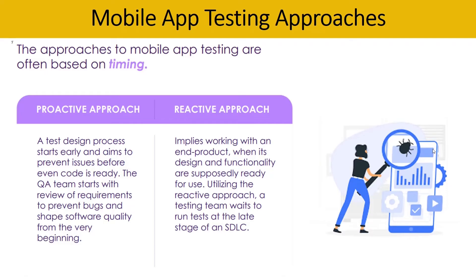Now let's talk about mobile application testing approaches. We have two choices: proactive approach and reactive approach. The proactive approach means you have a proper test plan, a proper test design document with test scenarios and test cases, proper requirements, the scope of the application, and planned testing cycles for smoke, sanity, regression, and end-to-end testing. The reactive approach means you wait to see if issues come, then run your testing cycle — that is a very bad approach. As a good tester, it is our primary responsibility to use the proactive approach.